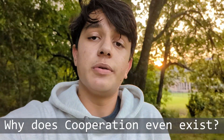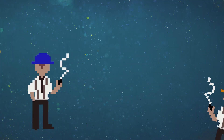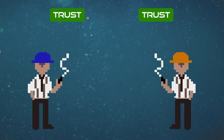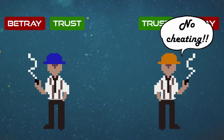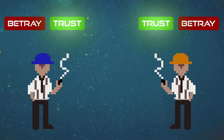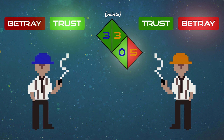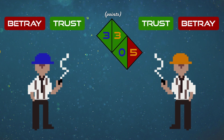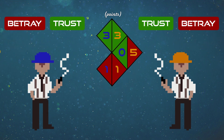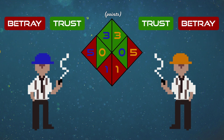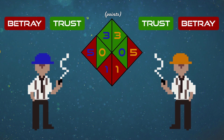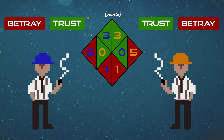One such game can help us better understand our question. We have two rational agents, each presented with a choice to trust or betray. This choice must be made independently, and if both agents trust each other, it's the best case scenario and they walk away with three points each. Agent Orange could get five points by betraying instead, but now Agent Blue finds himself with absolutely nothing. All hope is not lost because he too can betray and get one point instead of zero. This is known as the prisoner's dilemma, and it appears to tell us that it makes the most sense for each agent to betray.